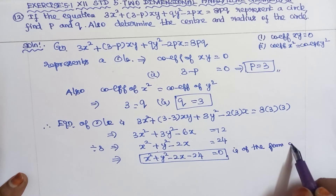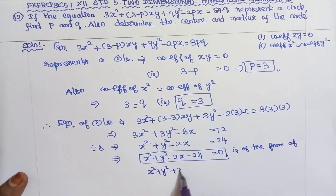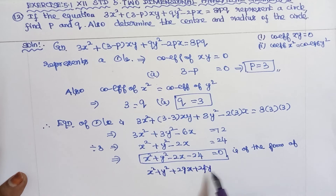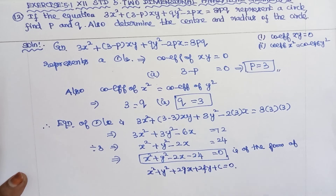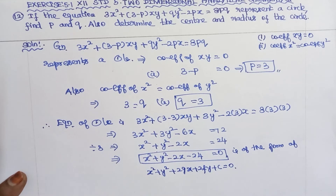The equation of the circle is of the general form x² + y² + 2gx + 2fy + c = 0. Comparing our equation with this general form, we can find the values of g, f, and c.